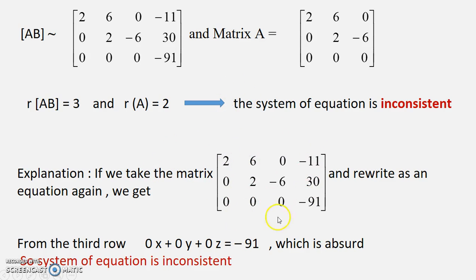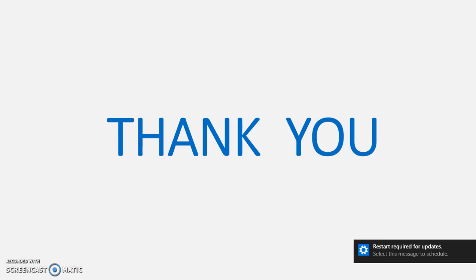Why system is inconsistent? You see if you take this augmented matrix and write this as an equation. The last row gives you this equation. 0x + 0y + 0z which we are getting as 91, which is in fact a nonsense. So that is because this system is inconsistent. I hope you understood this. Okay. Thank you.